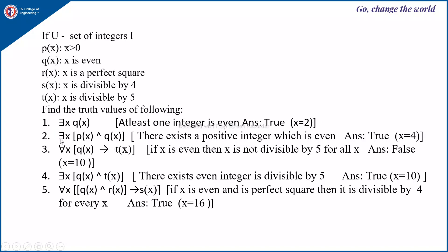Next, ∃x[p(x) ∧ q(x)]: p(x) has to be true and q(x) has to be true simultaneously. This is also true because if we consider x = 2, then 2 > 0 (p is true) and 2 is even (q is true). So there exists a positive integer which is even. Here p(x) represents x is a positive integer and q(x) represents x is even.